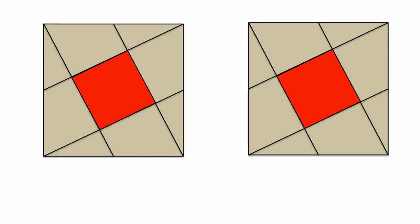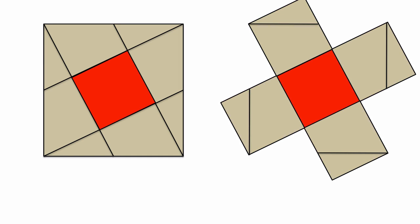By rearranging some of the pieces, you see that the original square, whose area is 1, can be reformed into five identical smaller squares, so the area of the red square is 1 fifth. Let's try